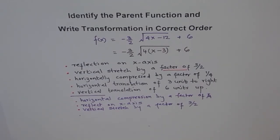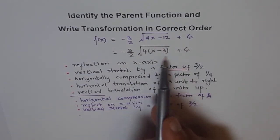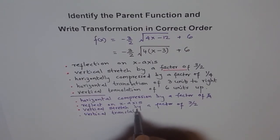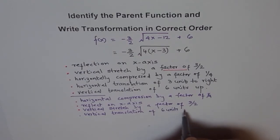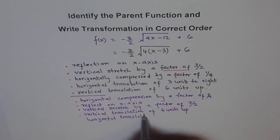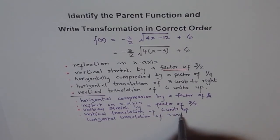And after that, we can combine both these. We can say, vertical translation of 6 units up. And then we can say, horizontal translation of 3 units to right.